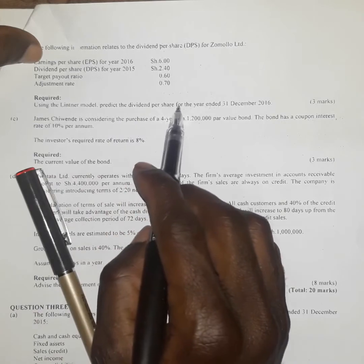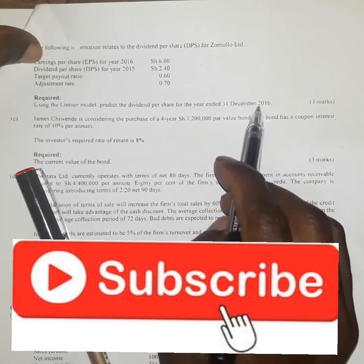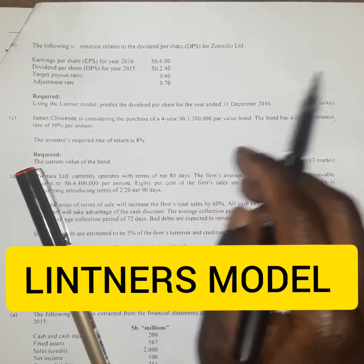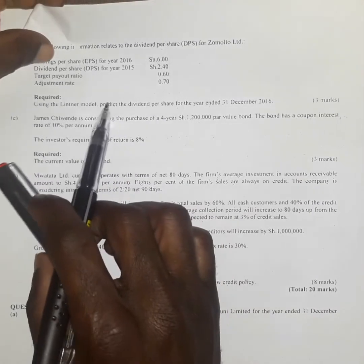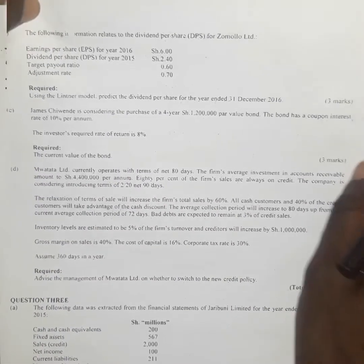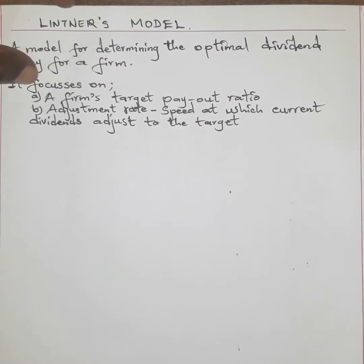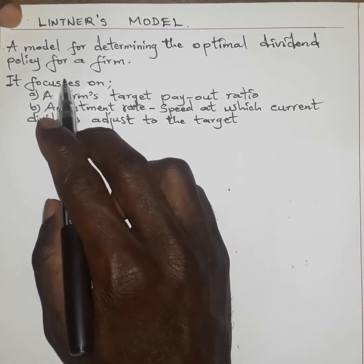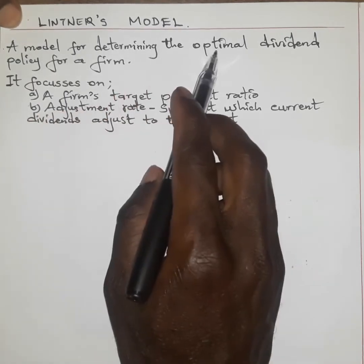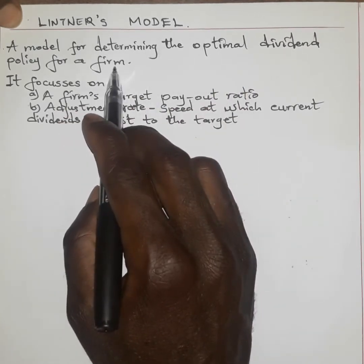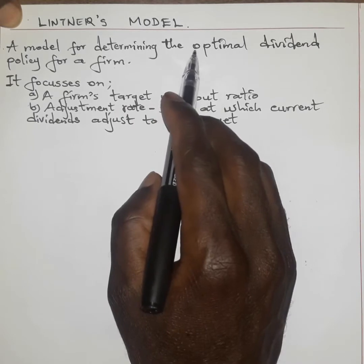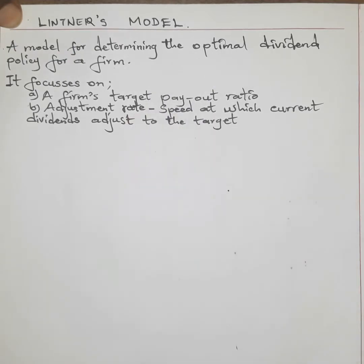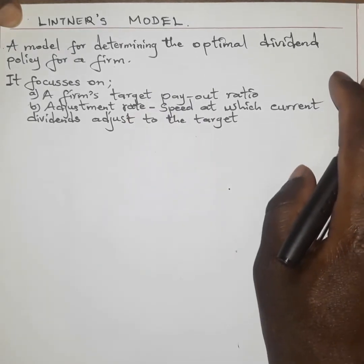We are being asked to predict the dividend per share for the year ended 31st December 2016. The linear model is one of the models normally used to determine the dividend payout in a particular year. When we talk about the linear model, we are referring to a model for determining the optimal dividend policy for a firm — that is, it's used to determine the amount of dividend payout for a particular firm at a particular period.